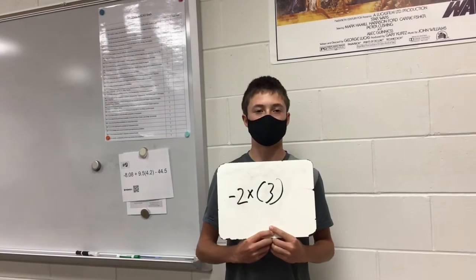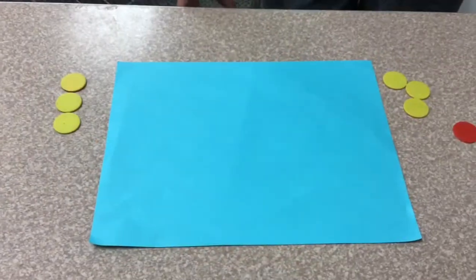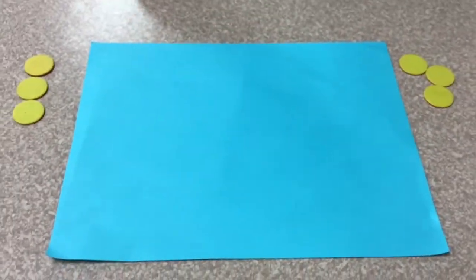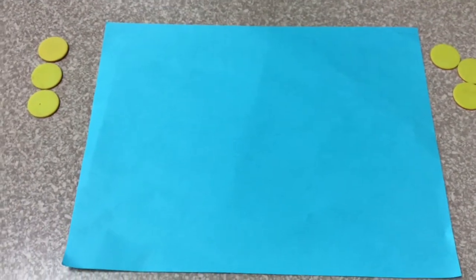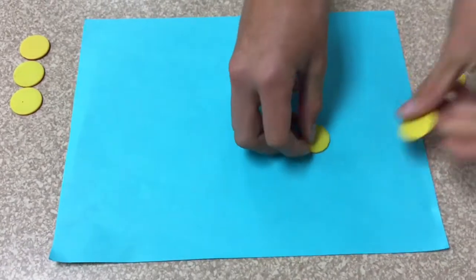Negative 2 times 3. Lastly, we're going to be doing negative 2 times 3. You can reword this to be the opposite of 2 groups of 3. So first let's put out 2 groups of 3.